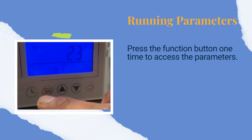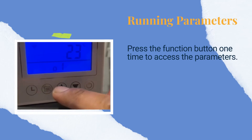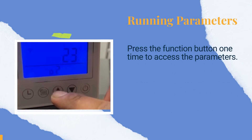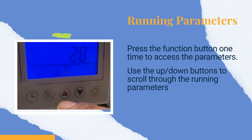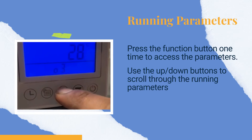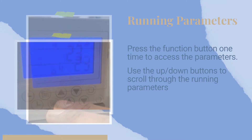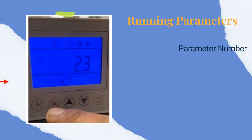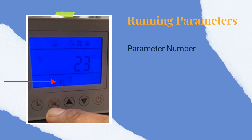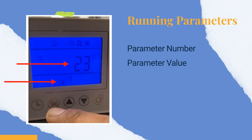Press the function button one time. Next, use the up and down buttons to scroll through the running parameters. The parameter number appears at the bottom of the screen, and the value of the parameter is the larger number at the center of the screen.